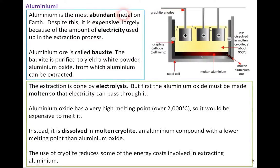Now aluminium is the most abundant metal on the earth, and despite this it's expensive, largely because of the amount of electricity used up in the extraction process. So the ore is called bauxite, and the bauxite is purified to yield a white powder aluminium oxide, from which aluminium can be extracted.